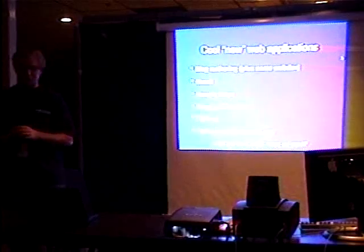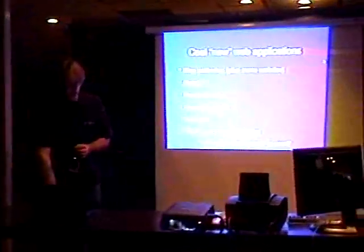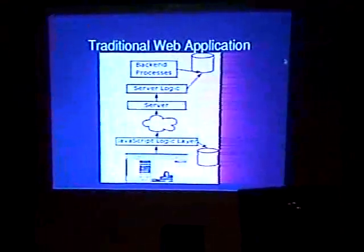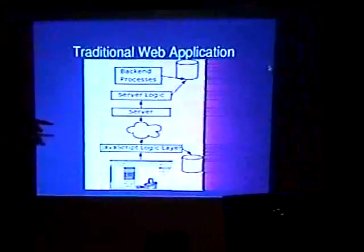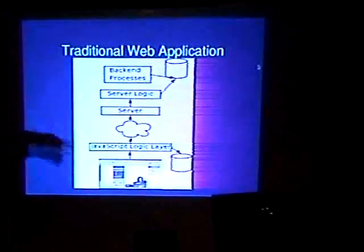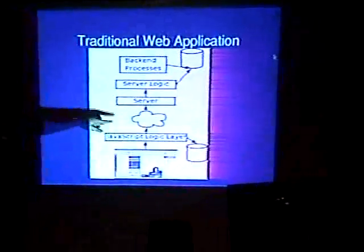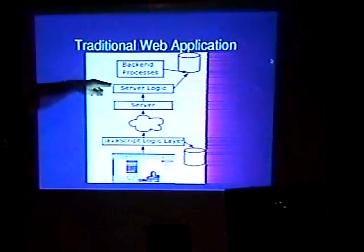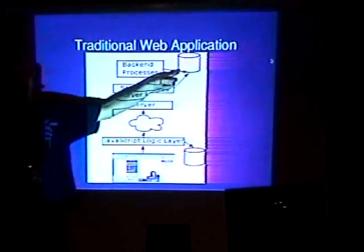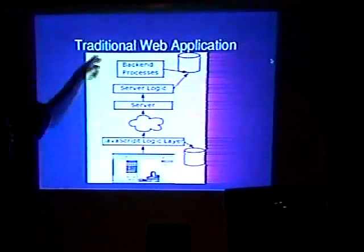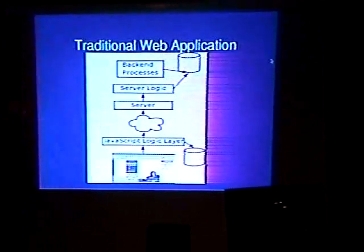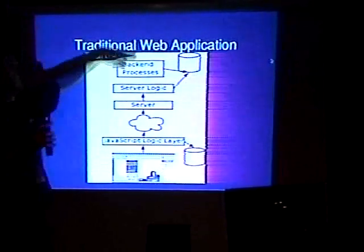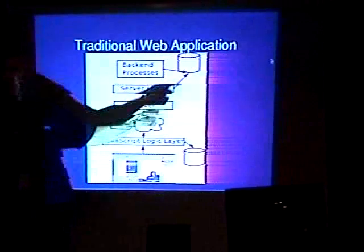Flickr and SmugMug are both photo sharing sites. So what's new about these? Why are those so much better than the web apps we've had for a long time? This is what a traditional web application looks like: you have a browser, some type of JavaScript logic layer which normally validates your input, possibly some type of local variable cache, your internet cloud goes to a web server, the server has some logic — PHP, Perl, whatever — and normally it's referencing a database, with back-end processes that populate that database. A great example is a search engine — crawlers always running, populating a database, and the website hits off that database.